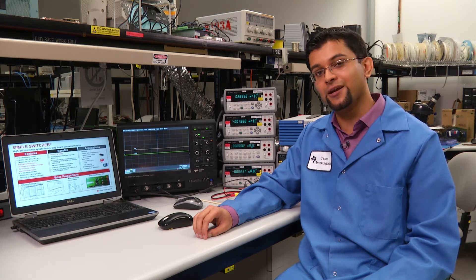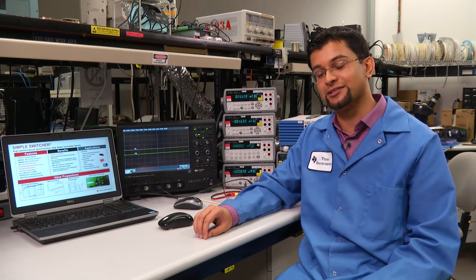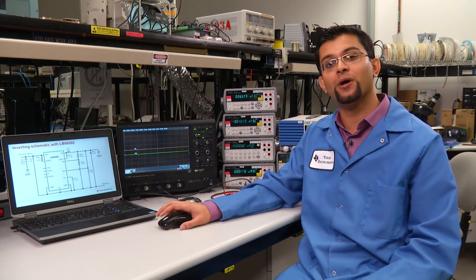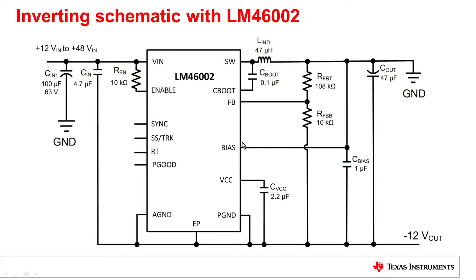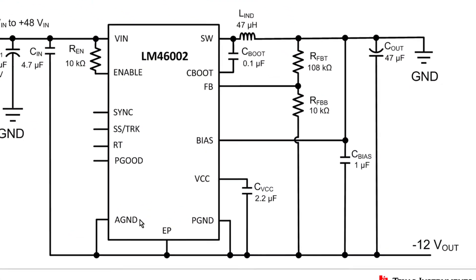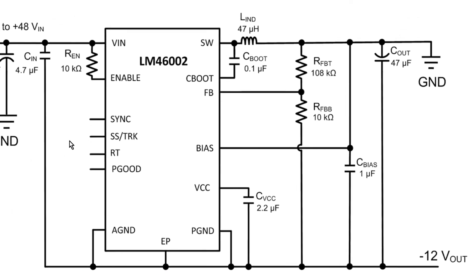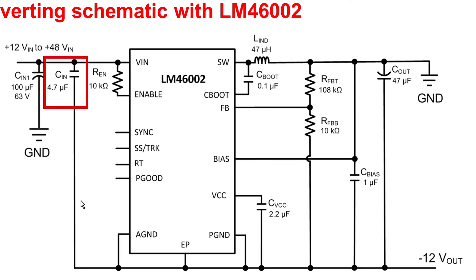I have a schematic here that's based on the LM46002 that can showcase how inverting can be made simple. If you notice, the ground terminals of the IC are all referenced to the negative rail. You will also notice that we have only one bypass cap connected from the input to the output.